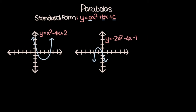Right off the bat, you can see that parabolas are u-shaped curves. The biggest difference between the two parabolas I've drawn is that the one on the left opens upward, and the one on the right opens downward. What determines whether a parabola opens upward or downward is a, the coefficient of the x squared term.